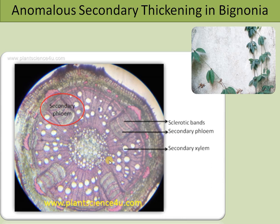In summary, in Bignonia, anomalous secondary thickening is due to the abnormal activity of the cambium at four diagonal points, where more secondary phloem is produced and less secondary xylem is produced. As a result, there are four secondary phloem regions that intrude into the xylem, and these are supported by sclerenchyma bands. Hope things are clear. You are with Plantscience4u.com. Thank you so much for your support.